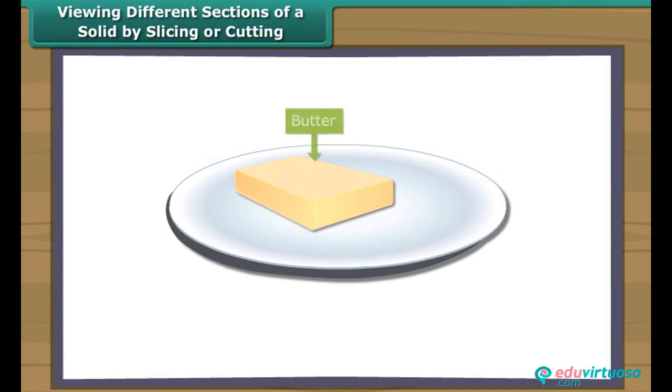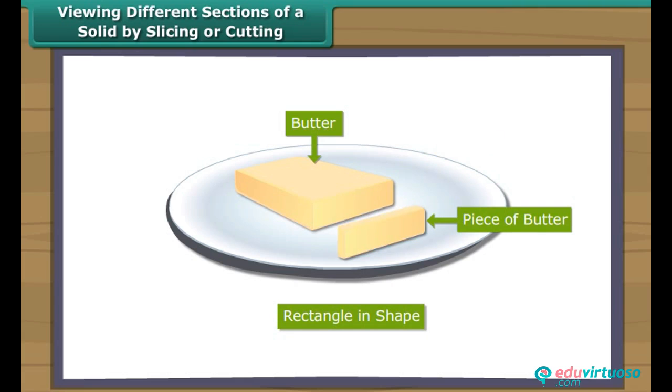Viewing different sections of a solid by slicing or cutting. Now we are going to play slicing game. We have a piece of butter which is cuboid in shape. Here we slice the piece of butter. Each face of the piece is nearly rectangle in shape. And this face is called as cross section of the butter piece.